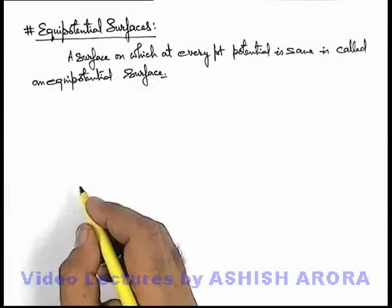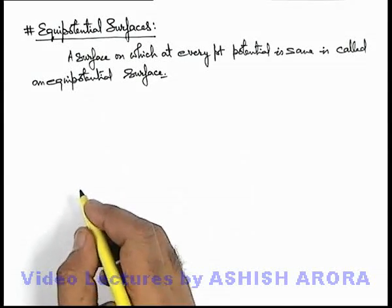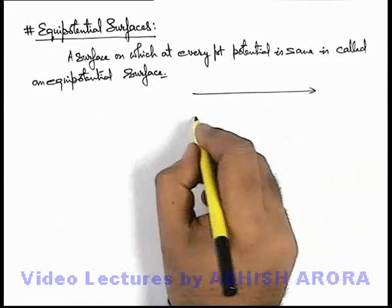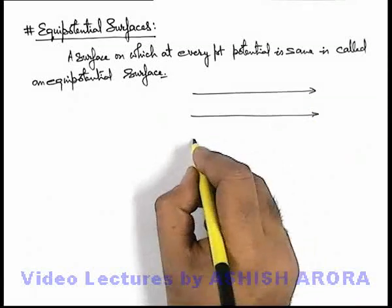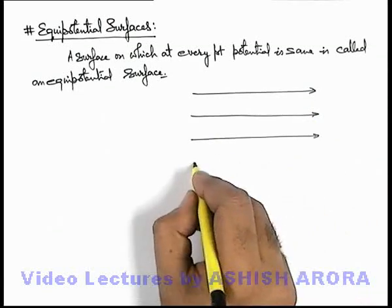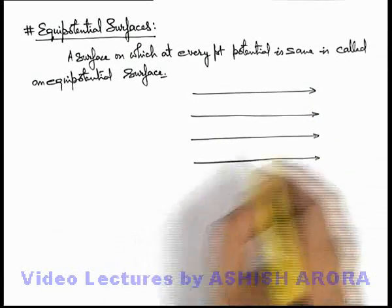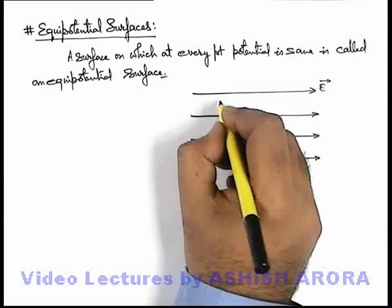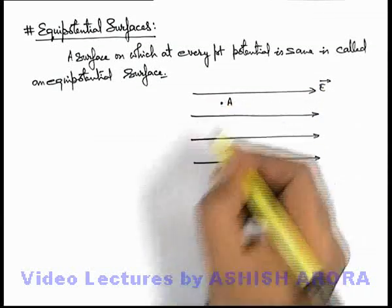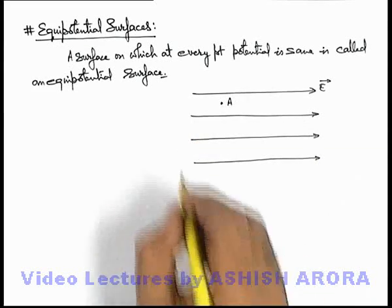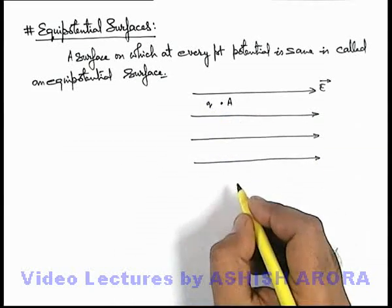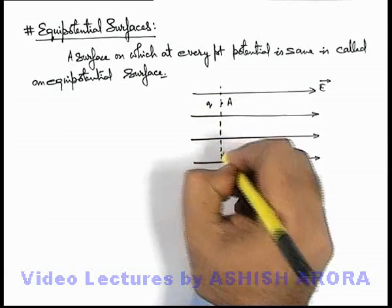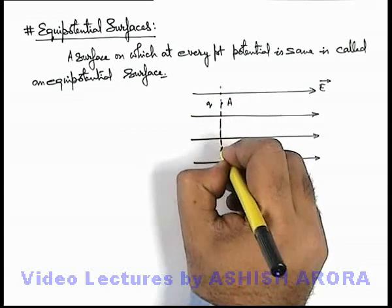To understand equipotential surfaces in an electric field, let's first consider a uniform electric field in which electric lines of forces are parallel and equidistant from each other. This is the direction of the electric field. Say we consider a point A in the field and we place a charge q at point A.